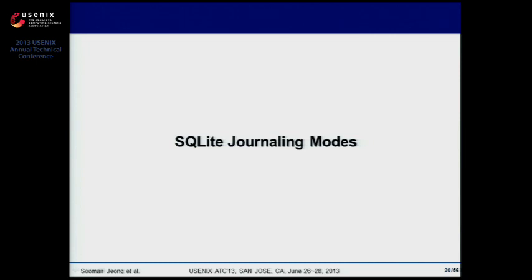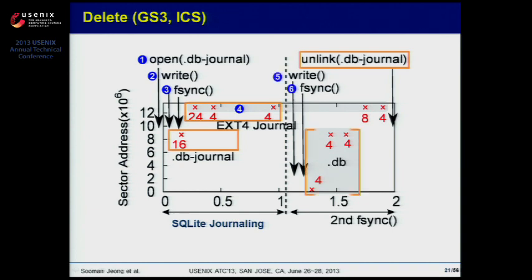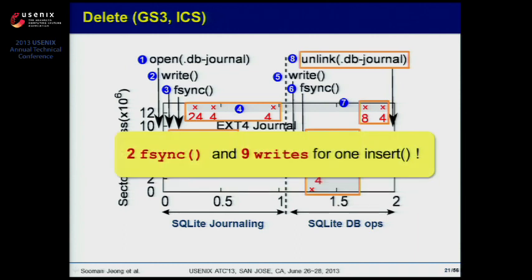Here I'll explain the experiment comparing SQLite journaling modes. The first mode is delete mode. It uses a journal file and deletes it every time. SQLite creates a .db journal file, writes it, and calls fsync. Then EXT4 performs journal I/O three times. Next, SQLite writes the actual .db file and calls fsync again, and EXT4 journal I/O occurs twice. Eventually, a single insert operation in delete mode triggers two fsync calls and a total of nine write operations.